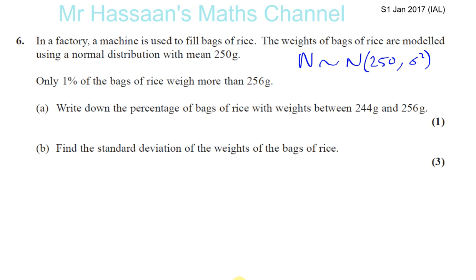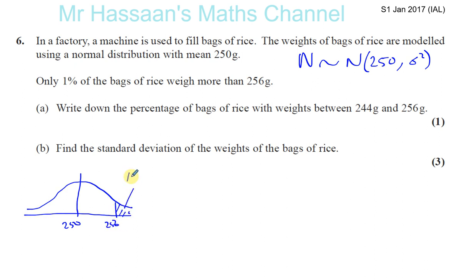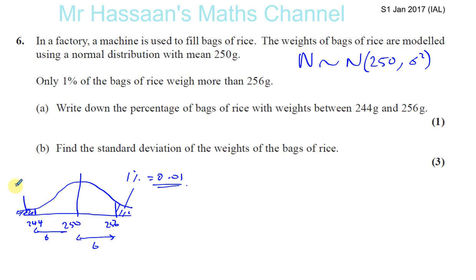Only one percent of the bags of rice weigh more than 256 grams. So the mean is here at 250, and 256 is to the right, with the area above it being just one percent, which is 0.01. Now 256 is six above 250, and 244 is six below 250, so by symmetry that lower tail area is also one percent.